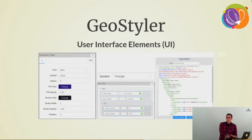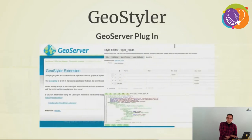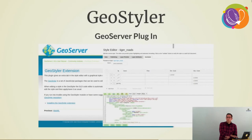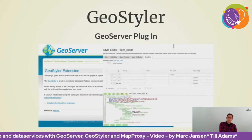A screenshot shows how GeoStyler looks — a classification with a preview of the classes applied on a map. It makes working with XML and other styling formats much easier. There's also a GeoServer plugin so you can use GeoStyler directly within the GeoServer user interface for a more comfortable styling experience.